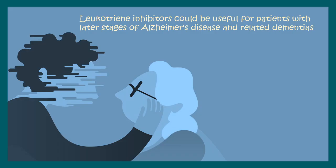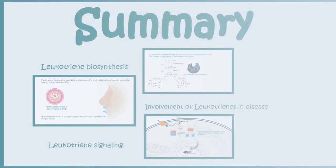Excess of leukotrienes can lead to anaphylactic shock, which is very dangerous. Recent research has also shown that leukotriene inhibitors could be very useful for patients suffering from late-stage Alzheimer's disease and dementia. Clinical trials have shown that administering these inhibitors might improve memory loss.